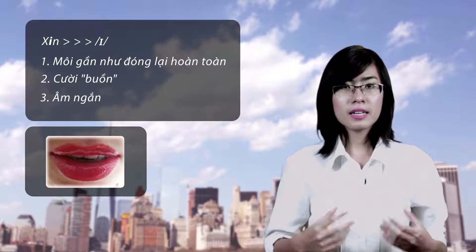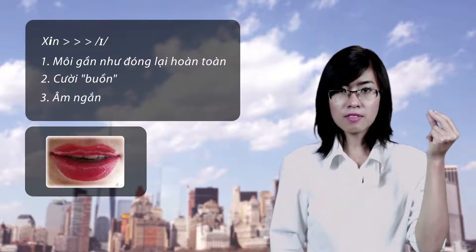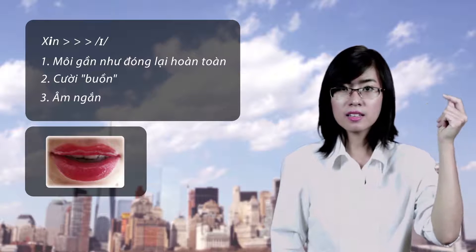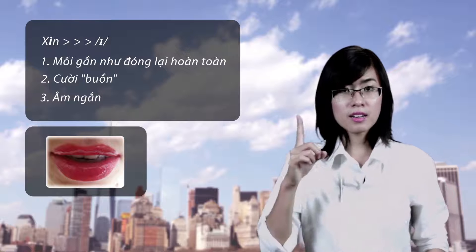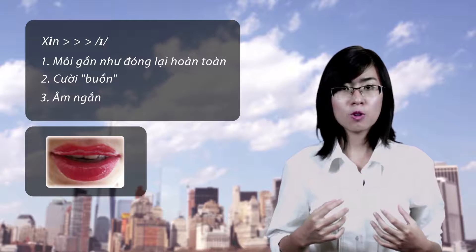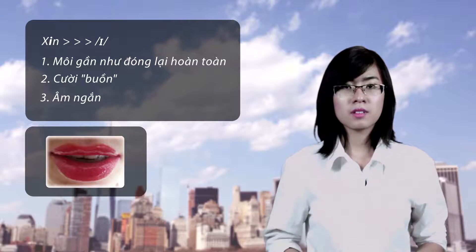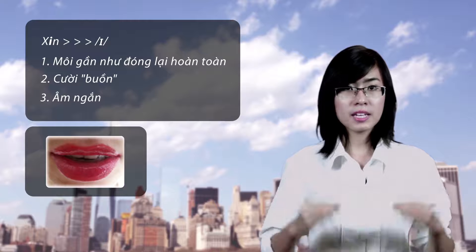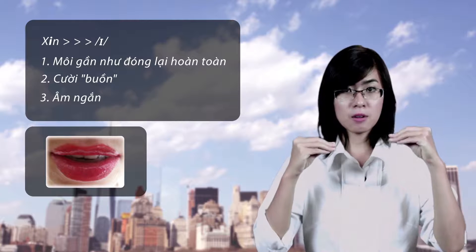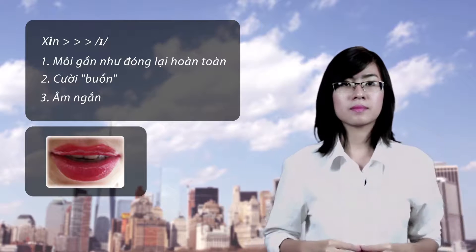Y. Âm Y là một âm ngắn giống như cái bóng tay vậy. Y. Nhớ rằng, không được thả hàm xuống vì như vậy bạn sẽ vô tình tạo ra âm Ơ. Giữ nguyên vị trí hai hàm trên và dưới cắn lại vào nhau thì bạn sẽ tạo được âm đúng. Y.